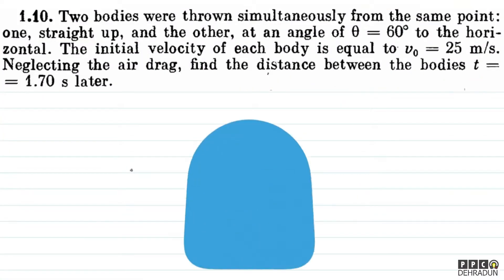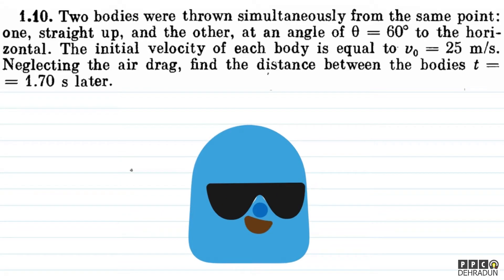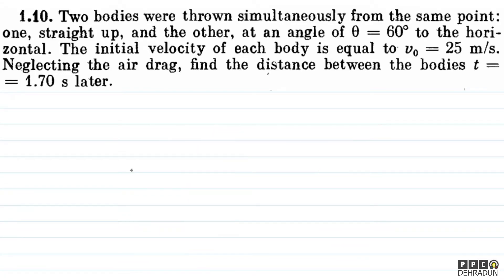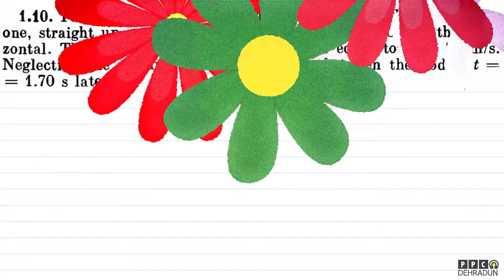Let's have a look at this beautiful problem of Irodov. The question says: two bodies are thrown simultaneously from the same point — one straight up and the other at an angle of theta equal to 60 degrees to the horizontal. The initial velocity of each body is equal to V0 equal to 25 meters per second. Neglecting air drag, find the distance between the bodies at T equal to 1.70 seconds later.